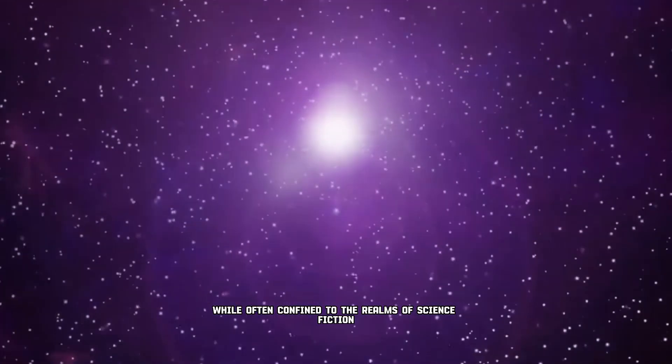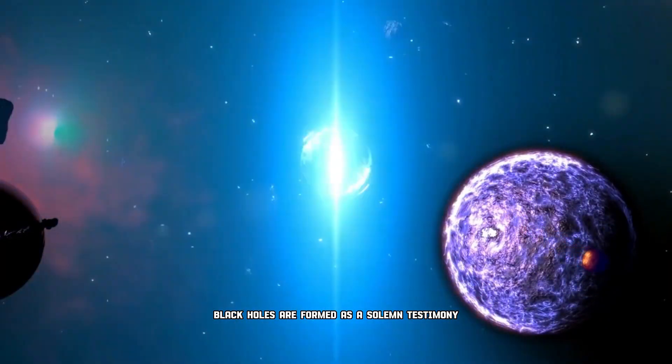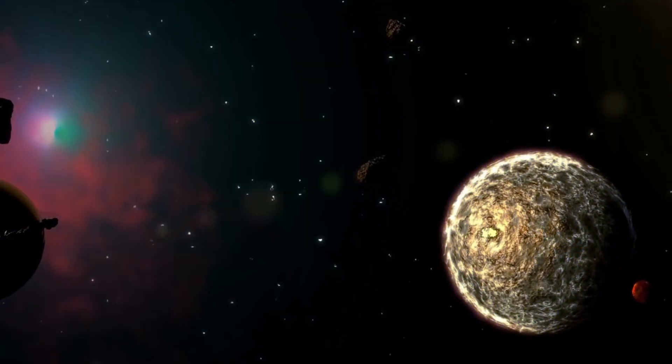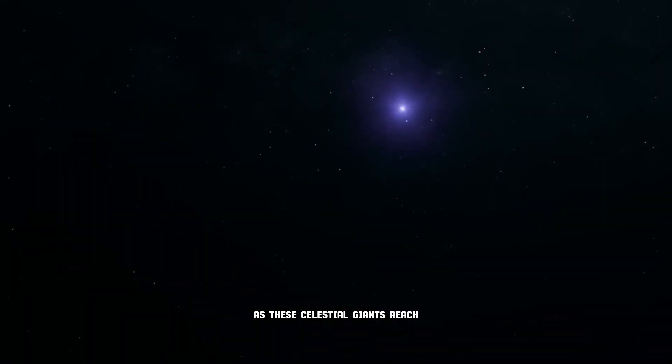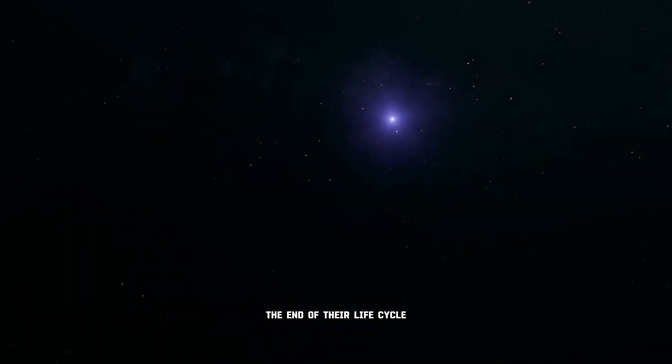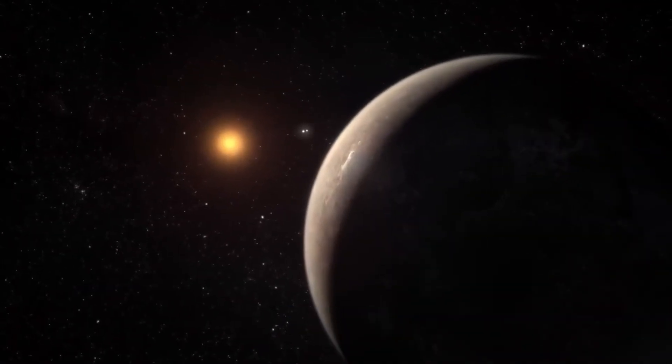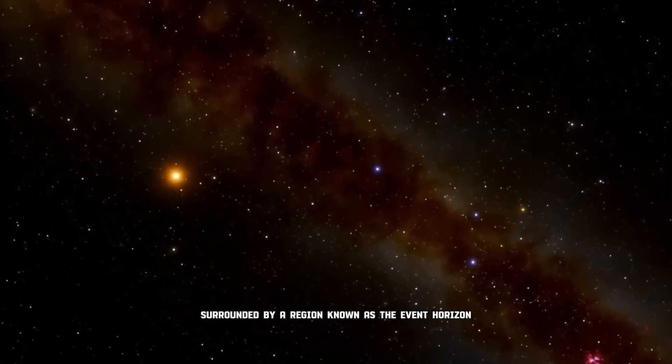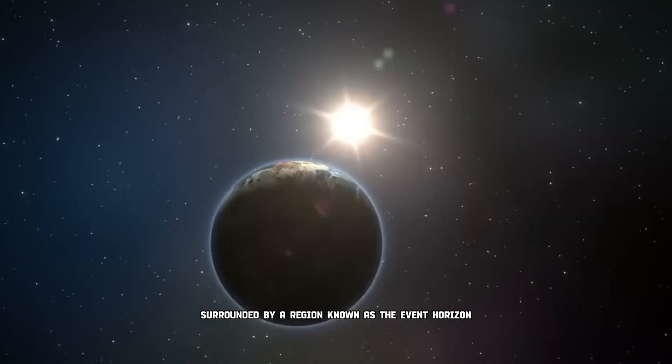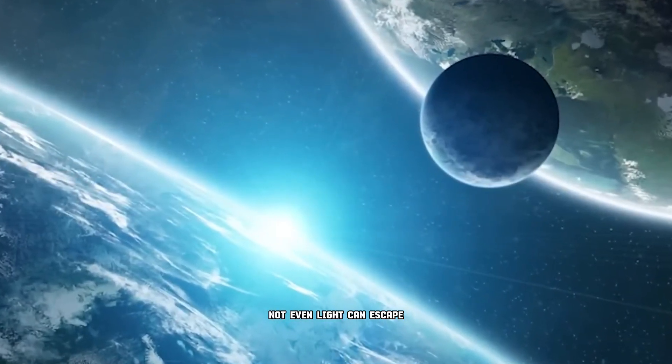But what exactly is a black hole, this lurking harbinger of destruction? While often confined to the realms of science fiction, black holes are formed as a solemn testimony to the death of stars. As these celestial giants reach the end of their life cycle, they collapse under the weight of their own gravity, creating a singularity, a point of infinite density, surrounded by a region known as the event horizon, beyond which nothing, not even light, can escape.